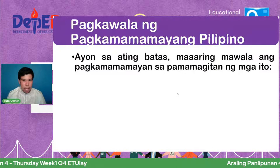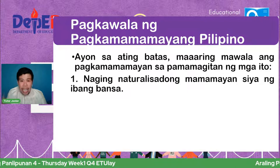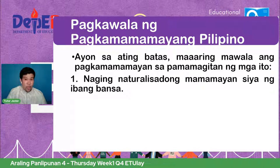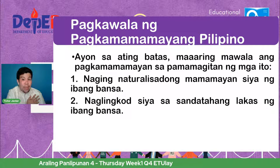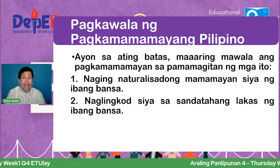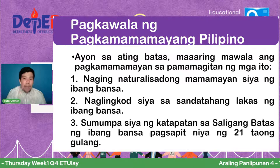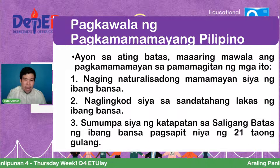Ang maaaring pagkawala ng pagkamamamayang Pilipino — ayon sa ating batas, maaaring mawala ang pagkamamamayan sa pamamagitan ng mga ito. Una, naging naturalisadong mamamayan siya ng ibang bansa. Ikalawa, naglingkod siya sa sandatahang lakas ng ibang bansa. Ikatlo, sumumpa siya ng katapatan sa saligang batas ng ibang bansa pagsapit niya ng 21 taong gulang. Sana wala sa ating mga mag-aaral ang nagbabalak na tuluyang iwan ang ating bansang Pilipinas.